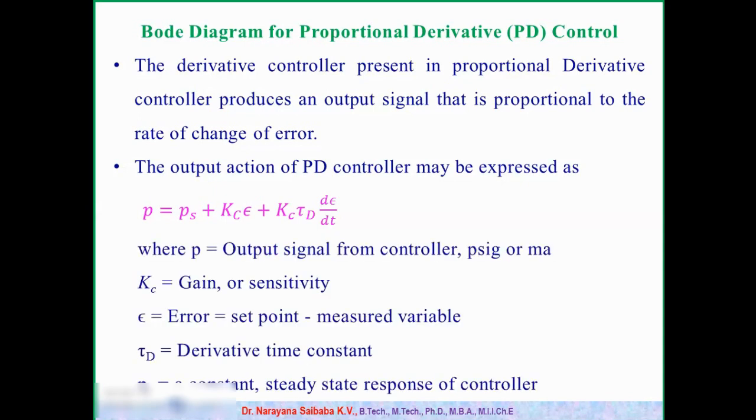Here, PS is nothing but the steady state response of the controller, so it is a constant. And KCE is the proportional gain or you can call it as gain or sensitivity. And E is nothing but the error. It is the deviation between set point and measured value. And tau_D is called as derivative time constant. In this way, the proportional derivative controller response will change.